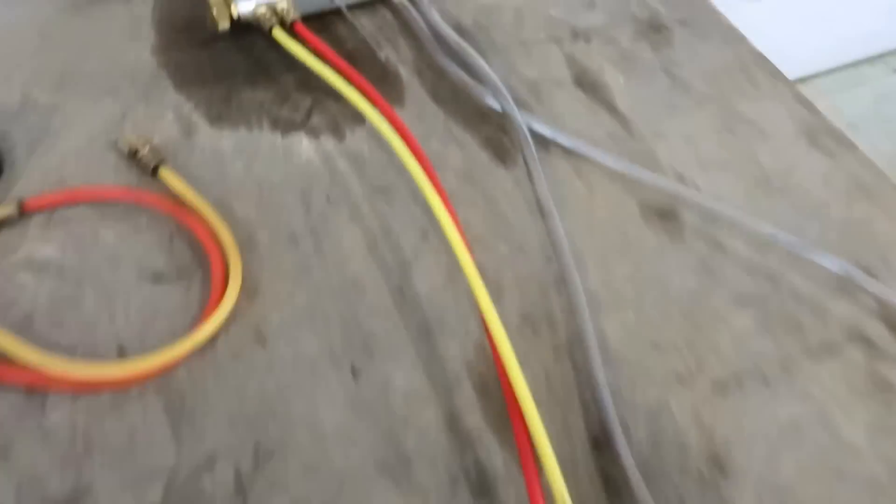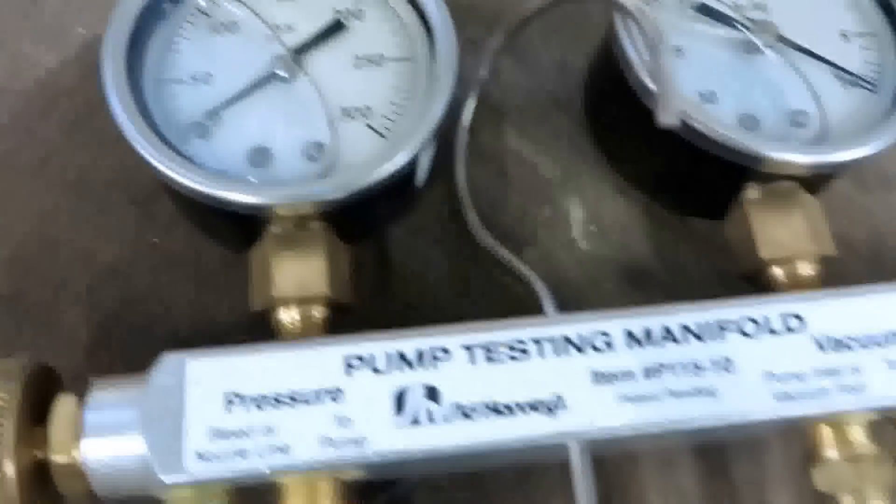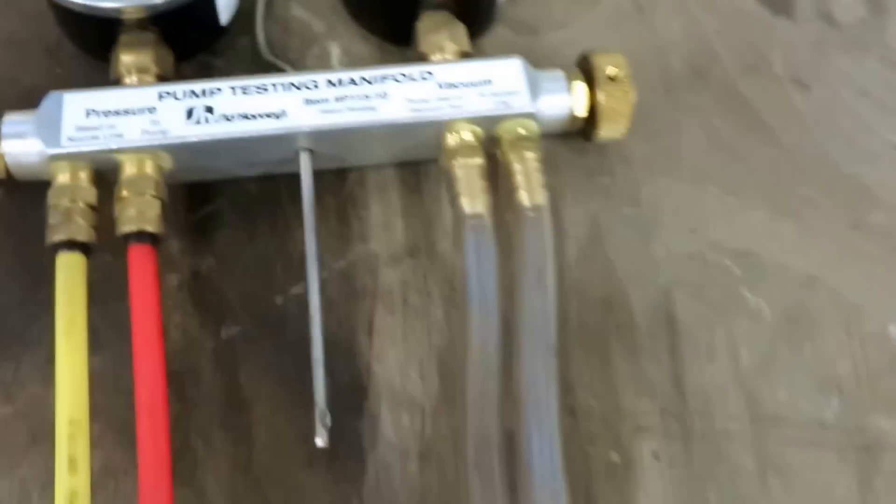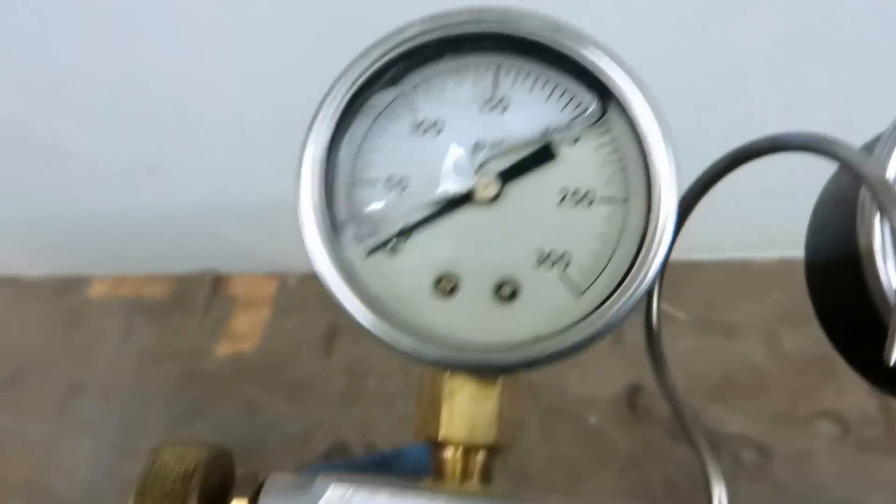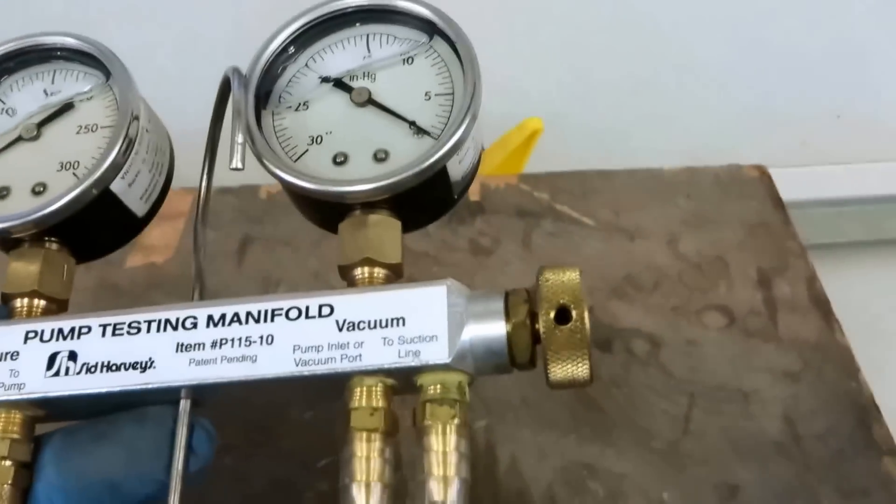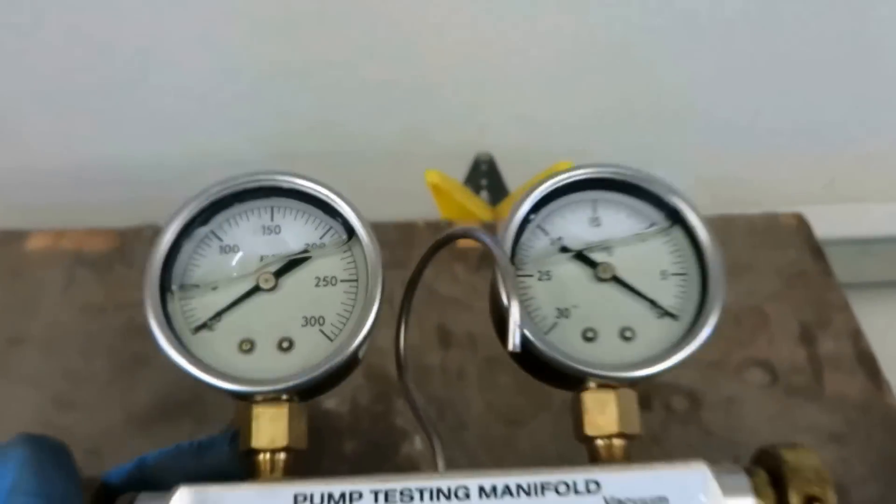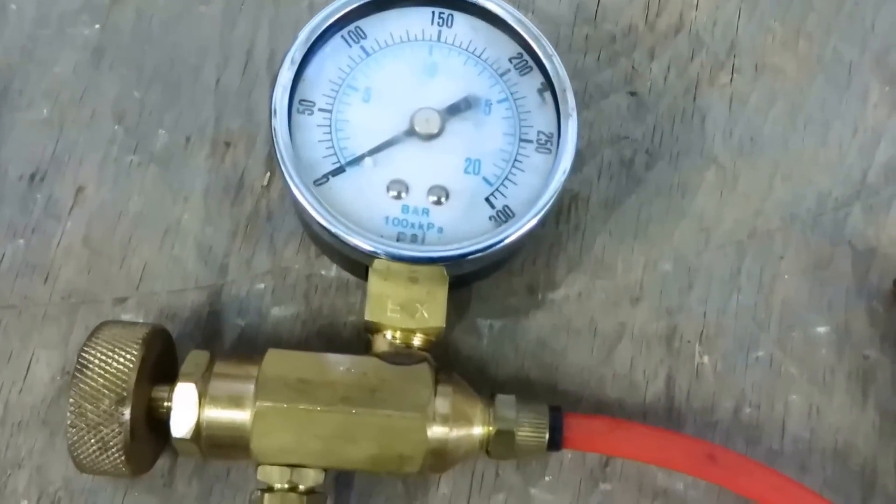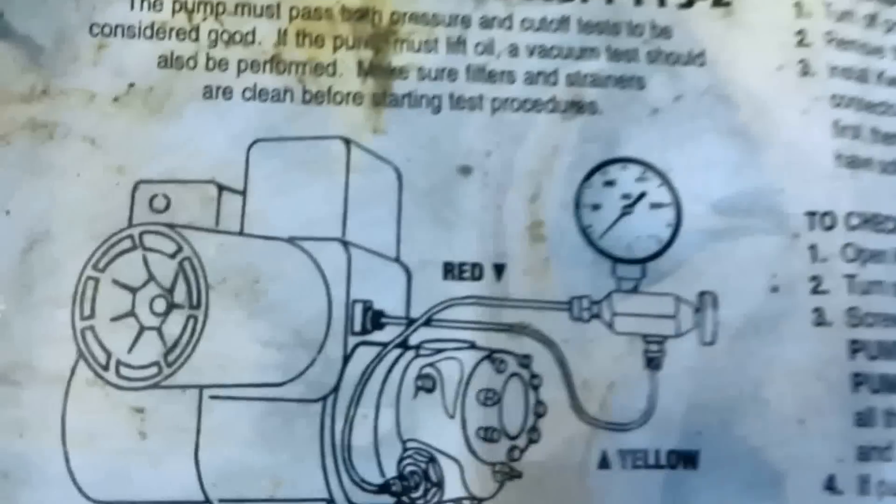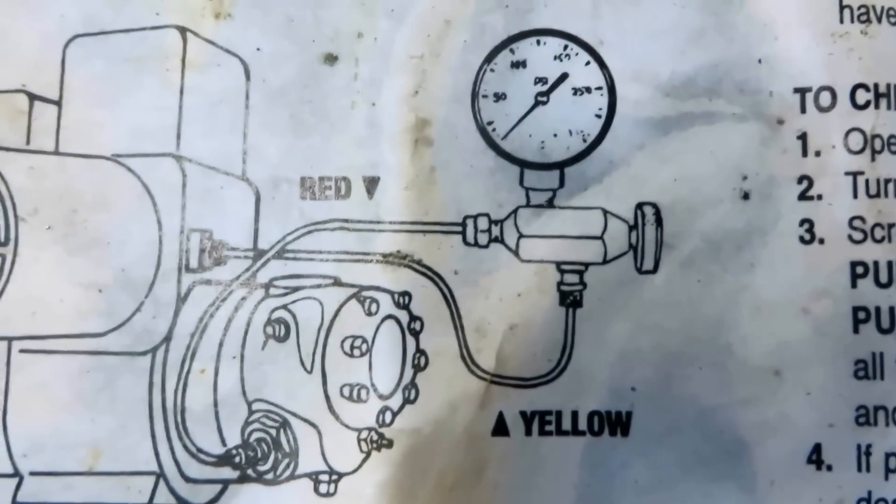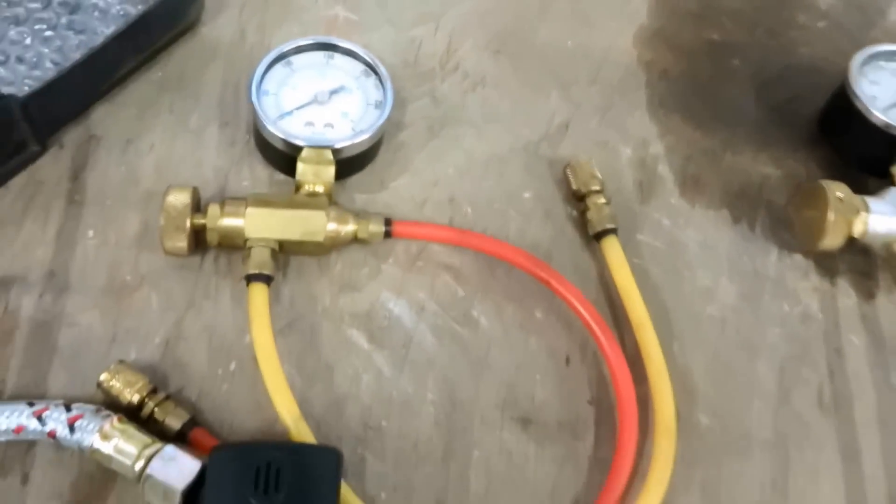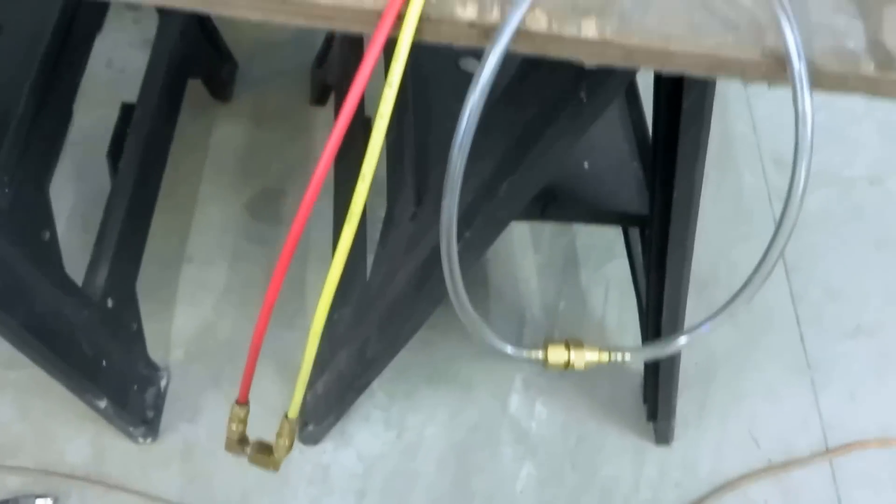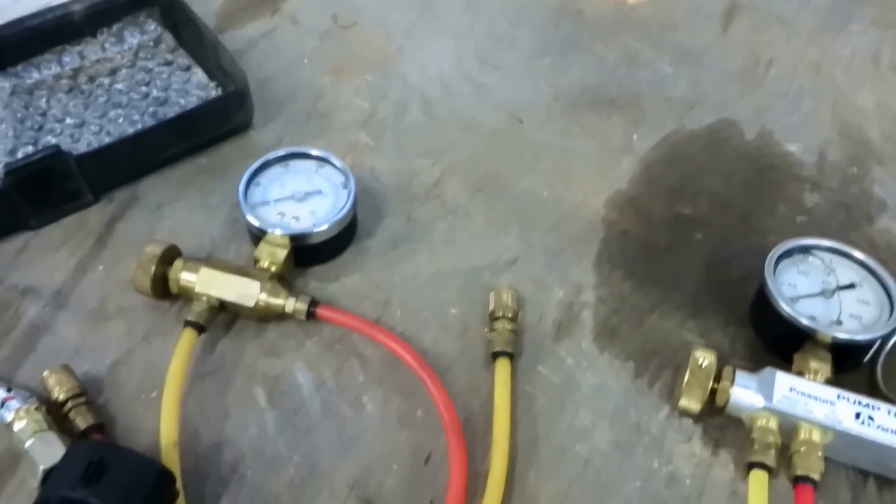For testing the pumps, I got this gauge here. It's like a manifold gauge, refrigerant gauge. Check the vacuum pressure coming into the pump and going out. And I can shut it off if I want. Use this sometimes on pumps. This one here is strictly just on the supply side of the pump. So you could actually run it and check the pressure at the same time which is pretty cool. Or I could just use my regular gauge like I usually do.